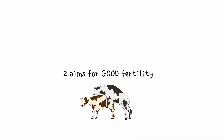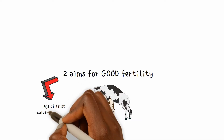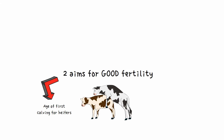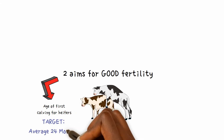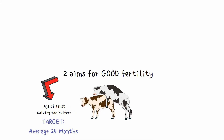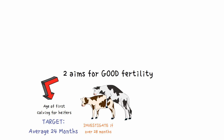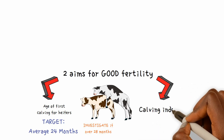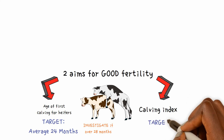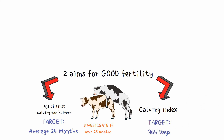There are two main aims for good fertility: to improve production and profitability. The age of first calving for heifers — the target is an average of 24 months, but not less than 22 months and not below the recommended target weight. An average beyond 28 months should be investigated. The second is a calving index target of 365 days; an average of more than 395 days should be investigated.